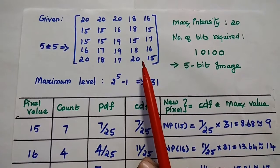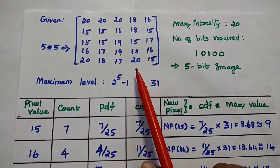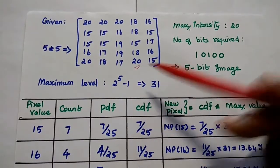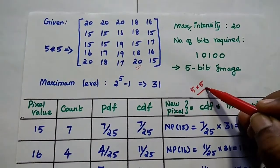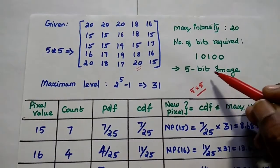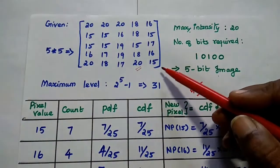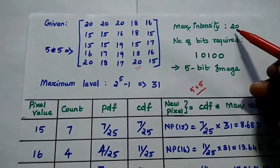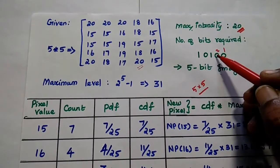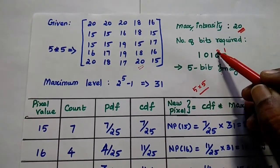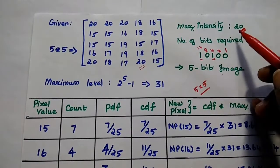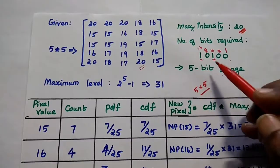This is the given 5x5 image segment with 25 pixel values. The maximum pixel value is 20. Since the number of bits is not given, we find it. The maximum intensity value is 20, which can be represented using 5 bits: 10100 in binary (16 + 4 = 20). So the given image is a 5-bit image.